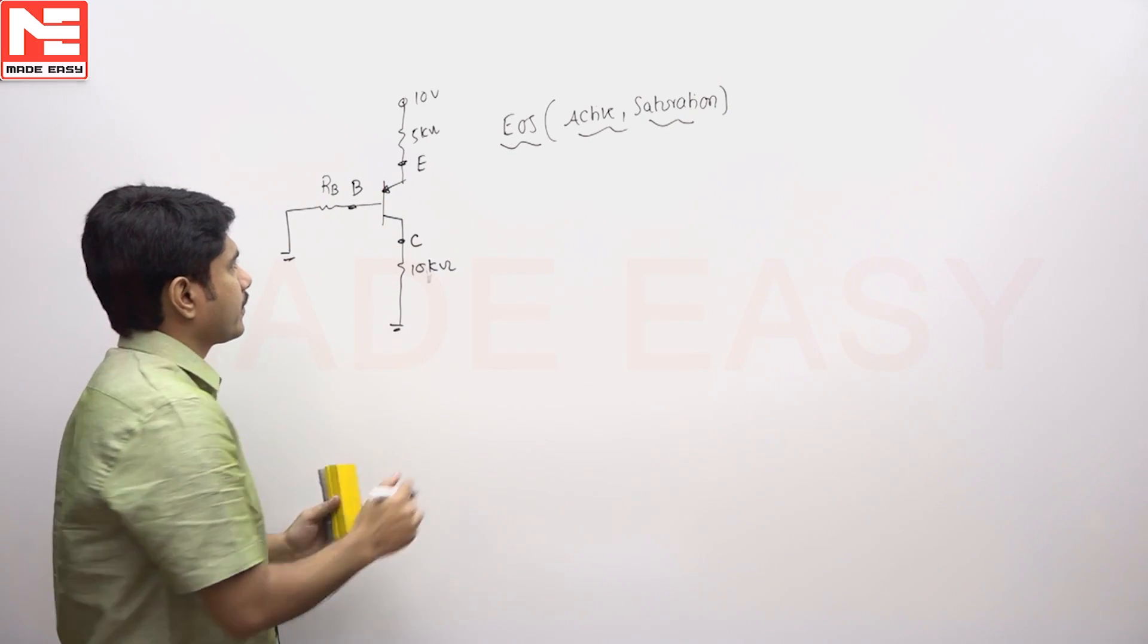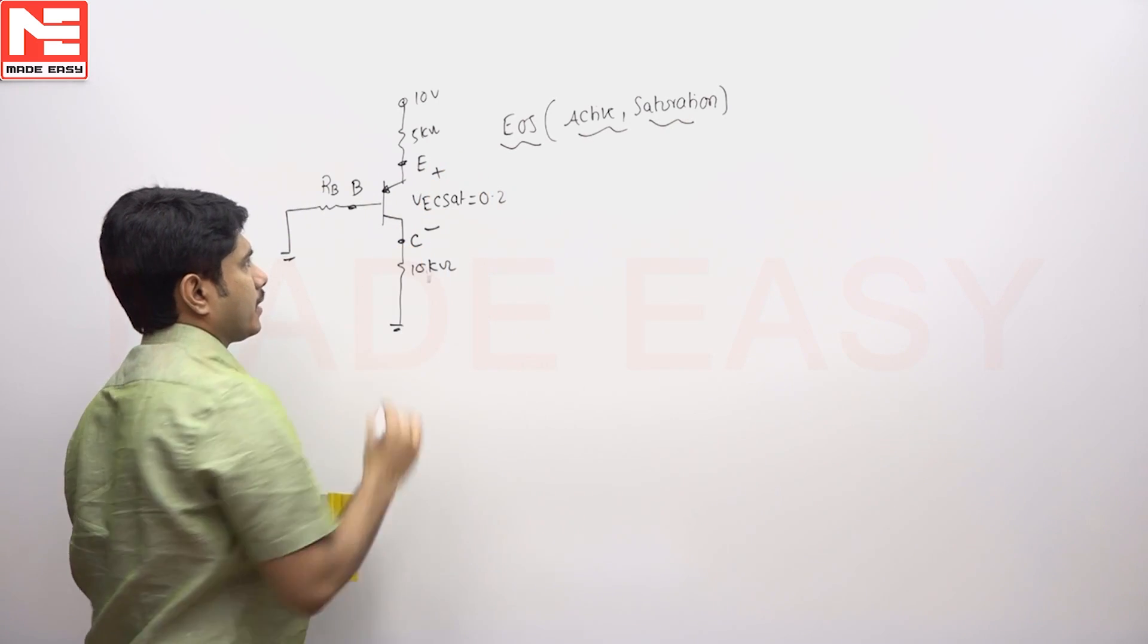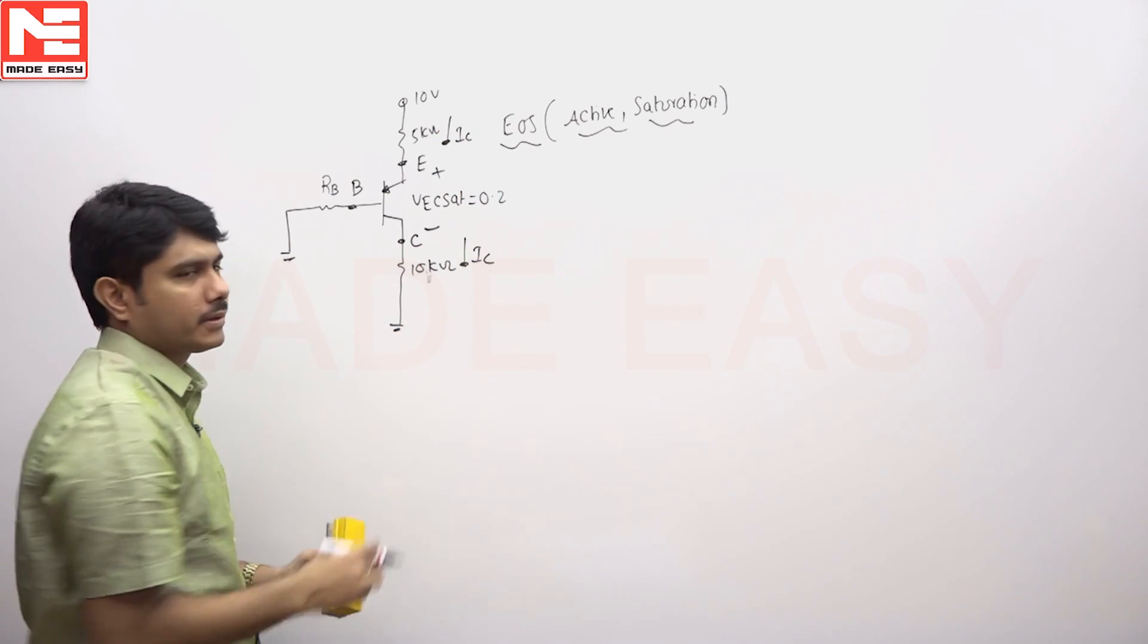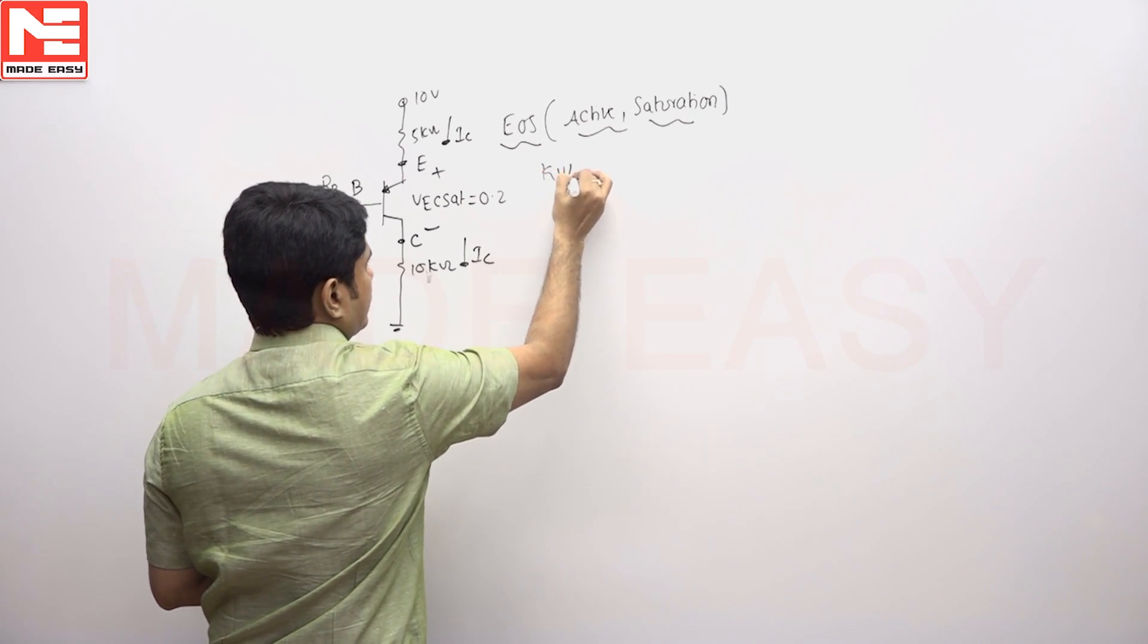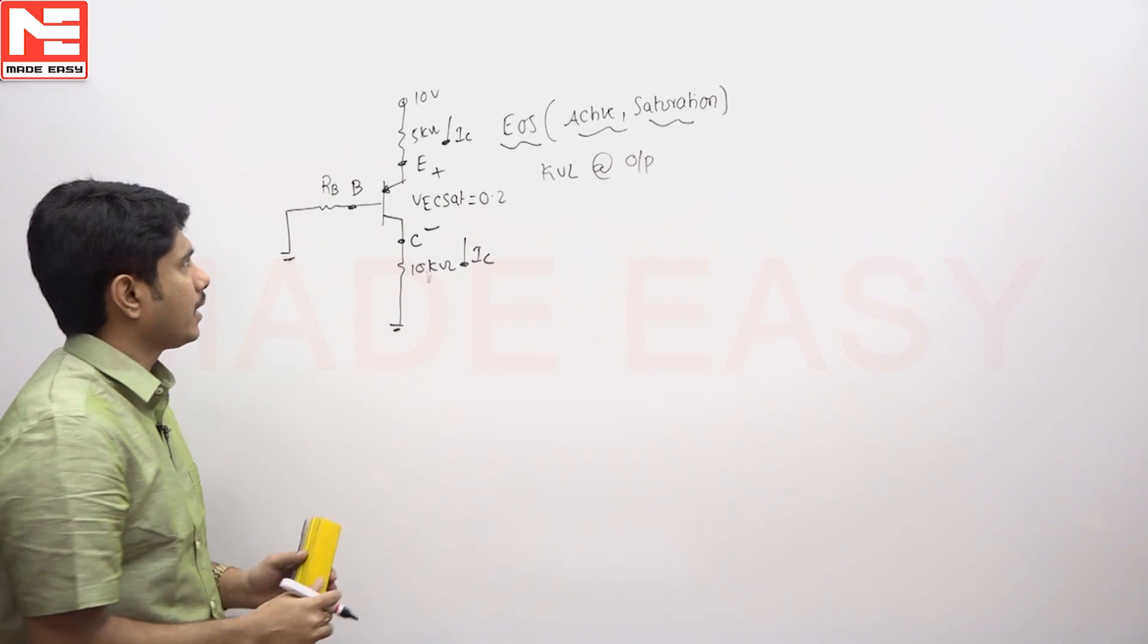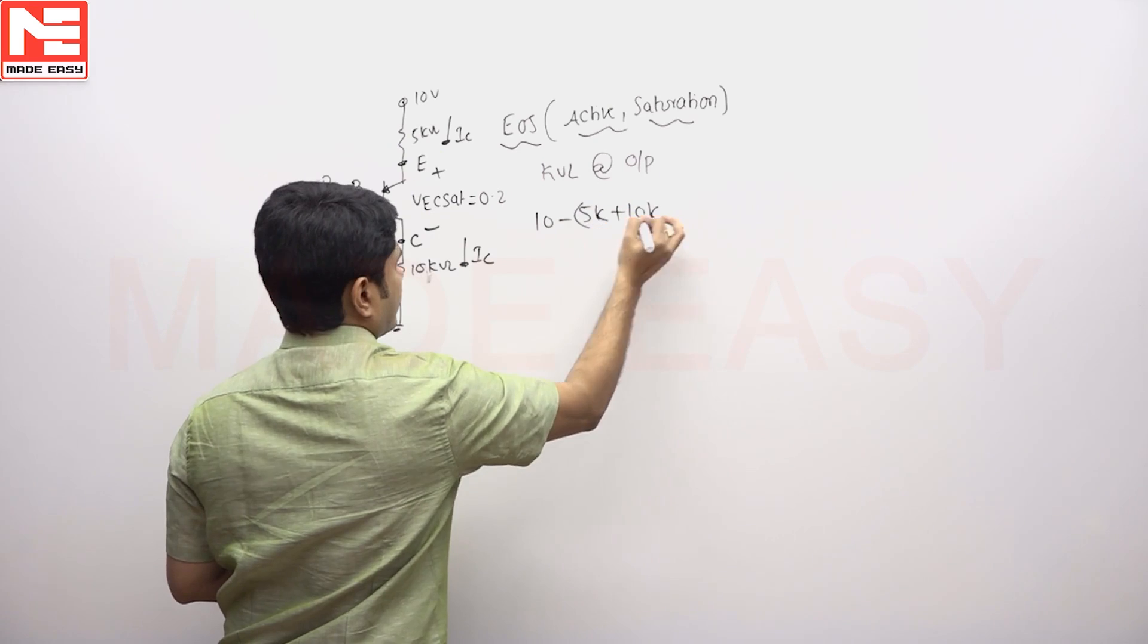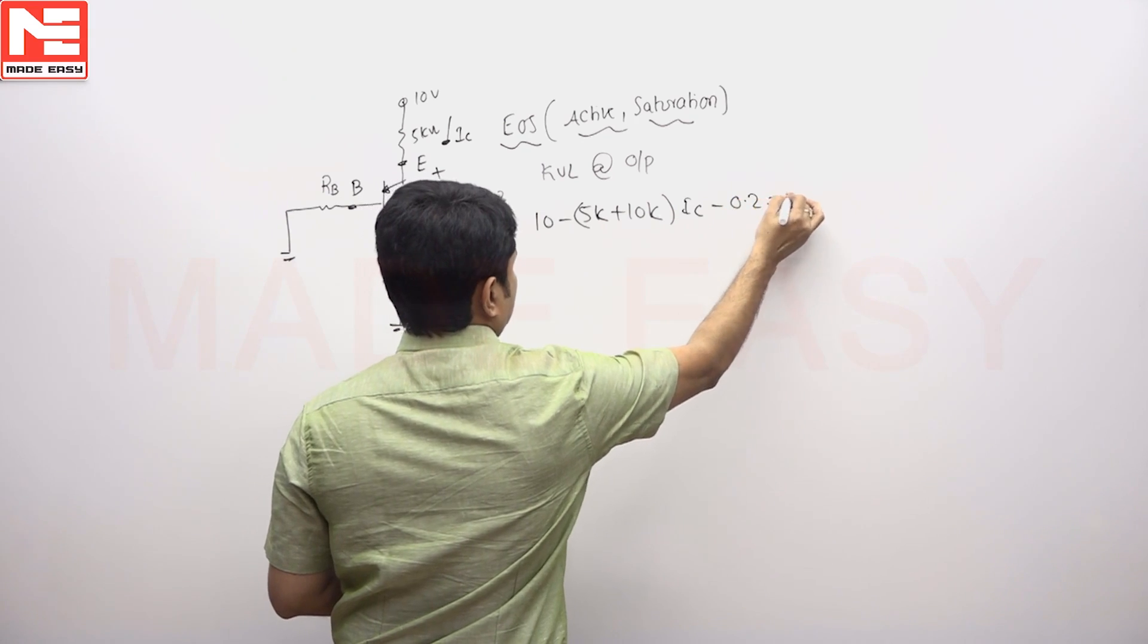So output loop equation if I take this is VEC sat that is 0.2 condition I have taken for saturation. Active condition is IC is equal to IC active condition. This is also valid now because we are under boundary condition. So KVL at output apply the KVL at output then answer will be 10 minus 5K.